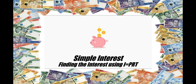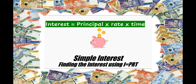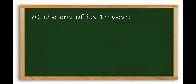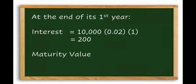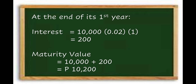To solve for simple interest, we multiply Principal × Rate × Time, or I = PRT. At the end of the first year, the interest is ₱10,000 × 0.02 × 1 = ₱200. To find the maturity value, we add the interest ₱200 to the principal ₱10,000, giving us ₱10,200.